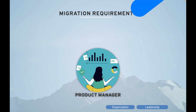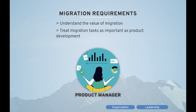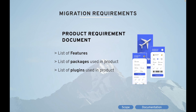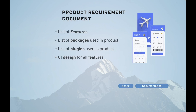The next requirement is a product manager who understands application migration as a critical product development task. They should understand the value of migration, treat it as important as product development, and help developers get all required resources in time. You also need a product requirement document listing all features to migrate, packages used, plugins used, and UI designs for all features.